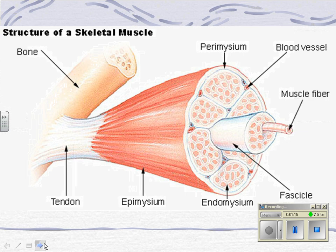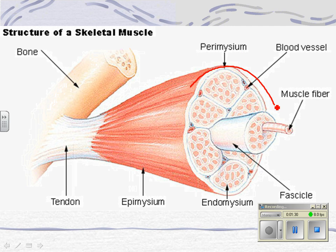If you look at a skeletal muscle, it looks kind of like a giant rope. Really big ropes are actually a big rope with a bunch of smaller ropes inside — like a ski rope, which is a rope made of smaller ropes. And those little ropes are made of individual fibers, all of them braided together. Your muscle is built the same way.